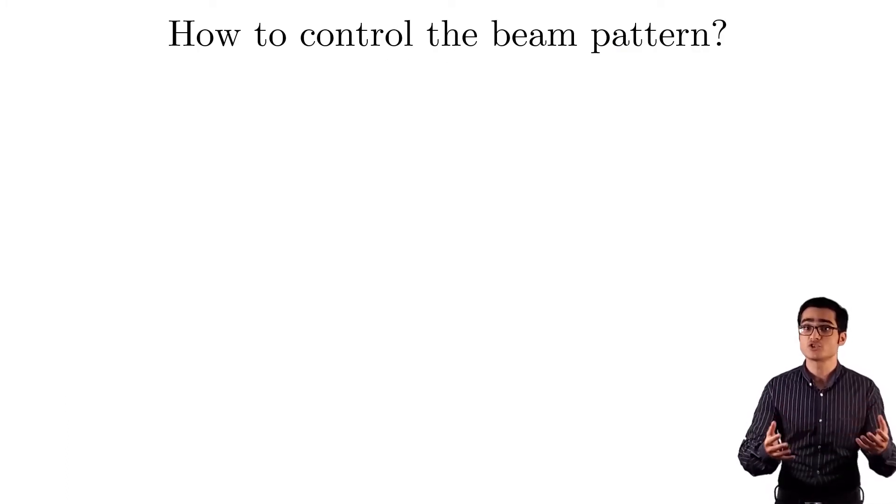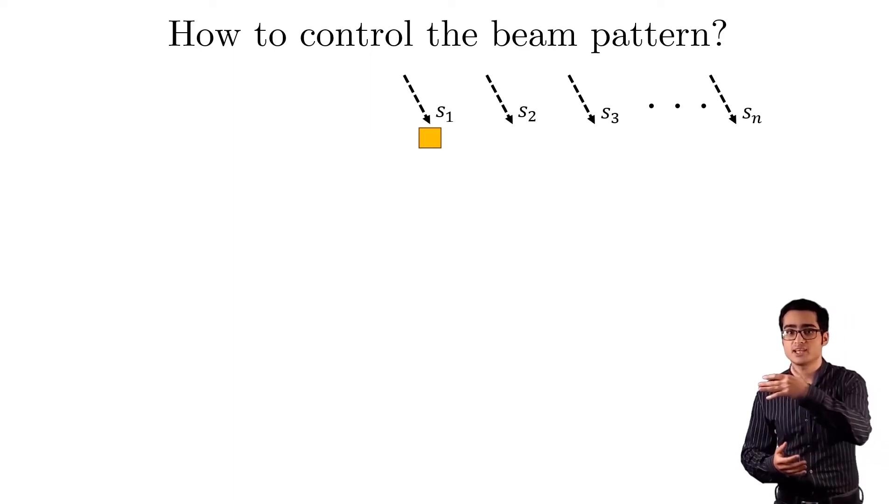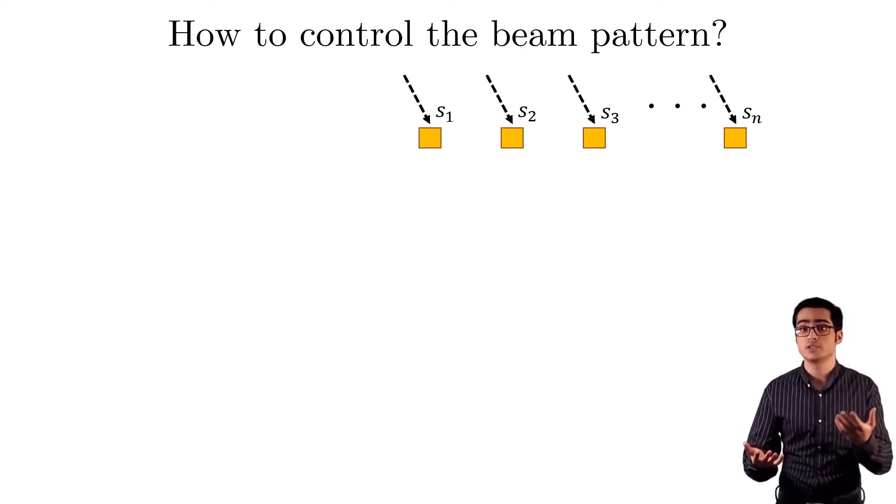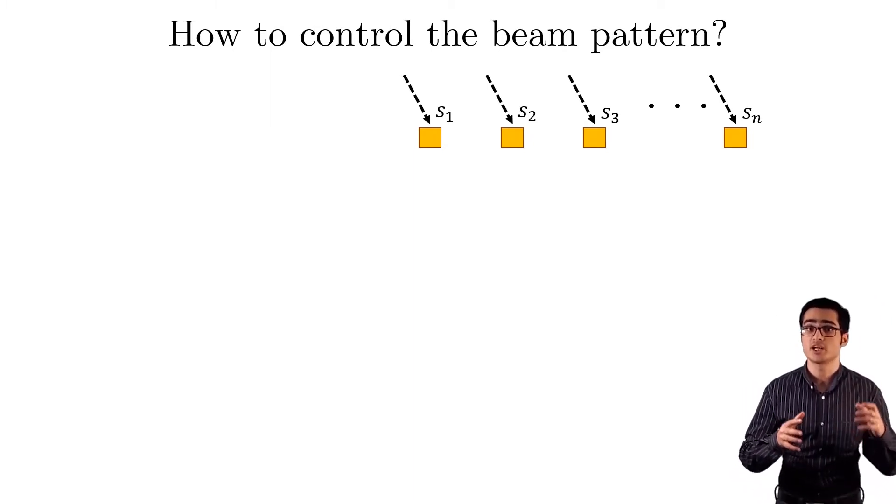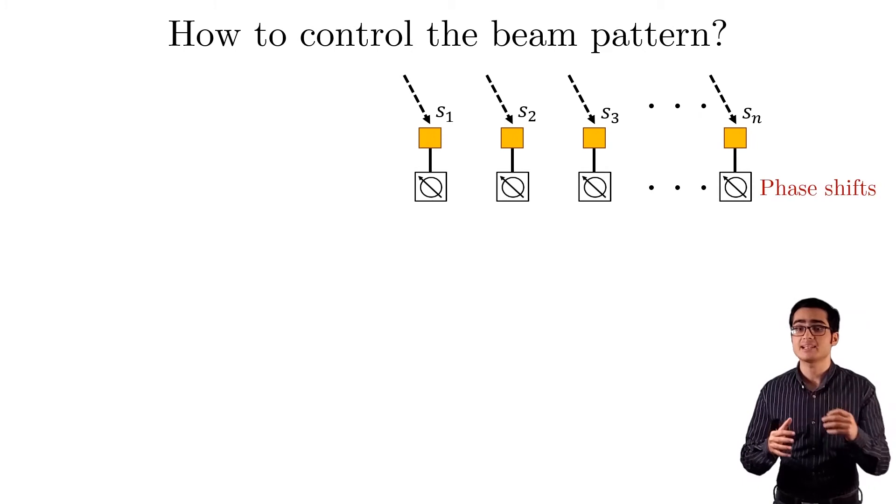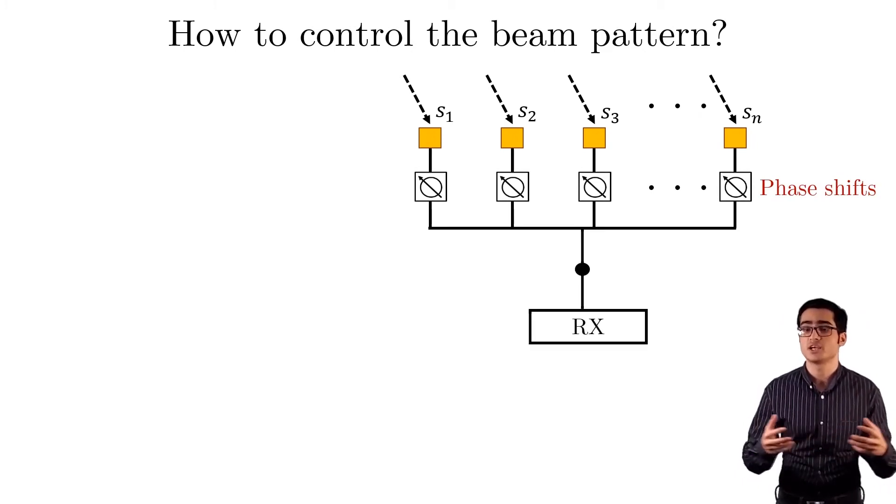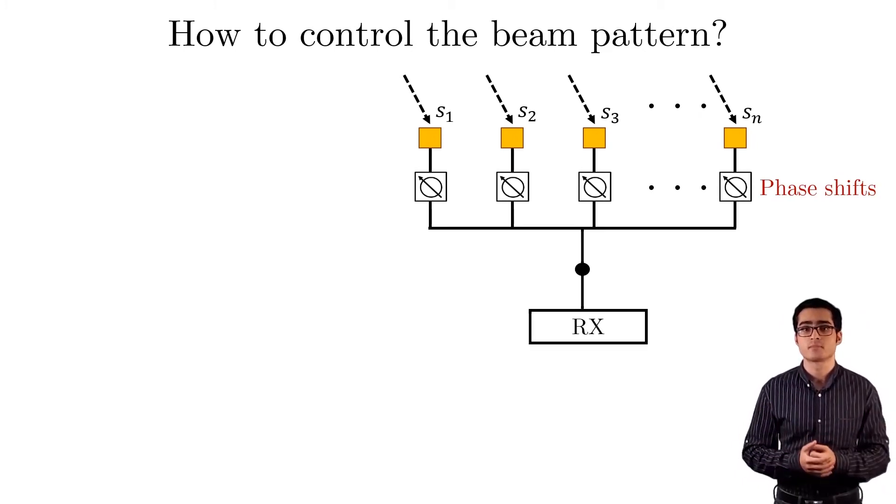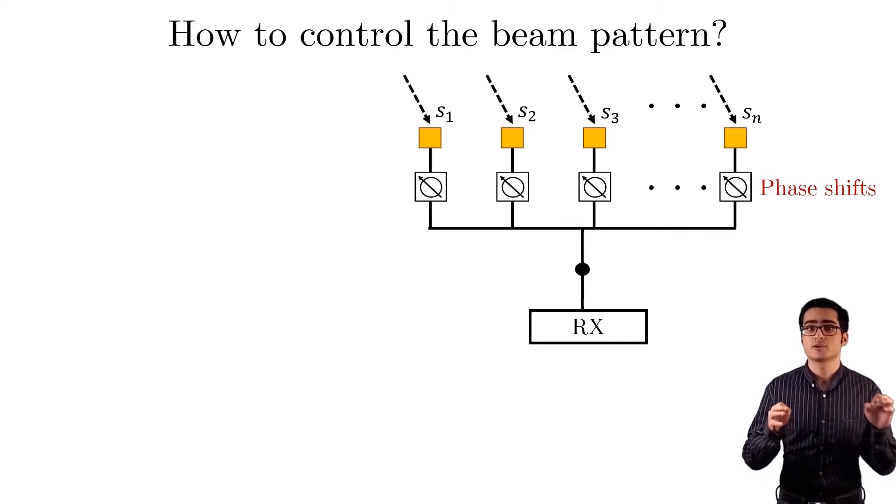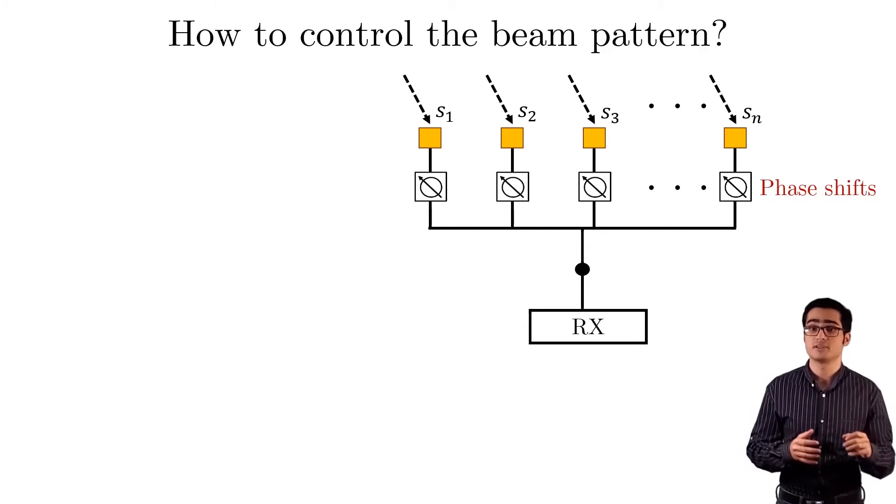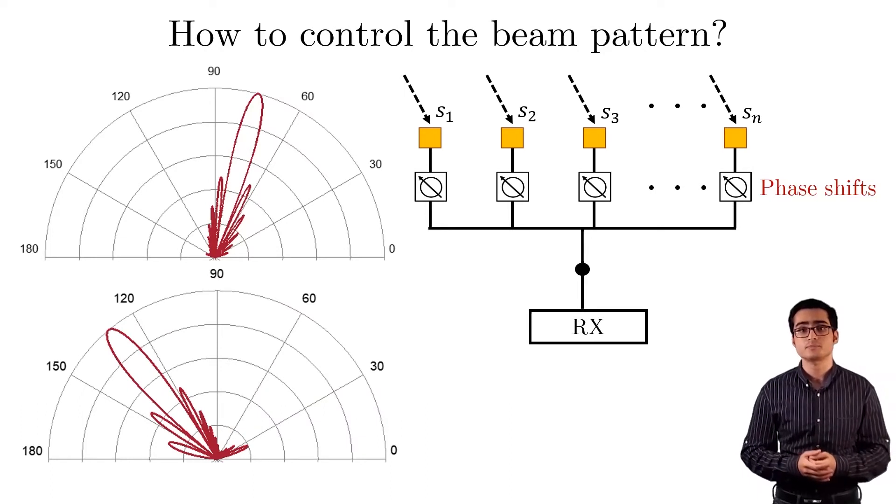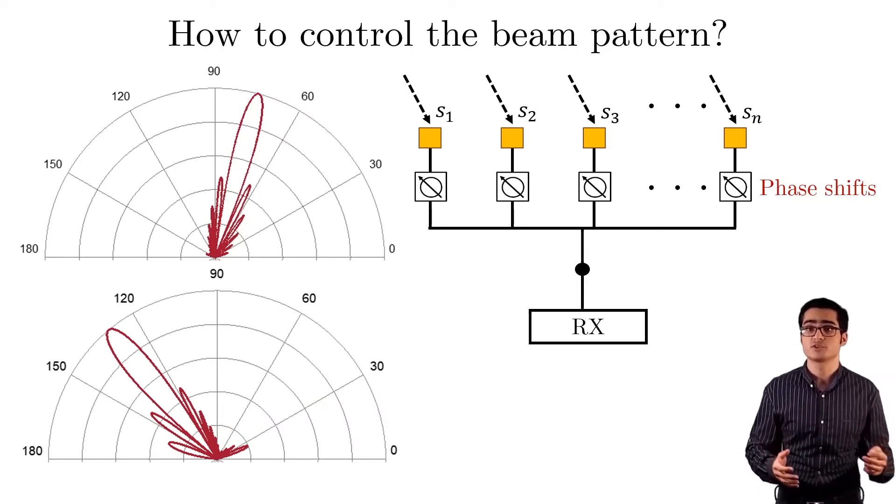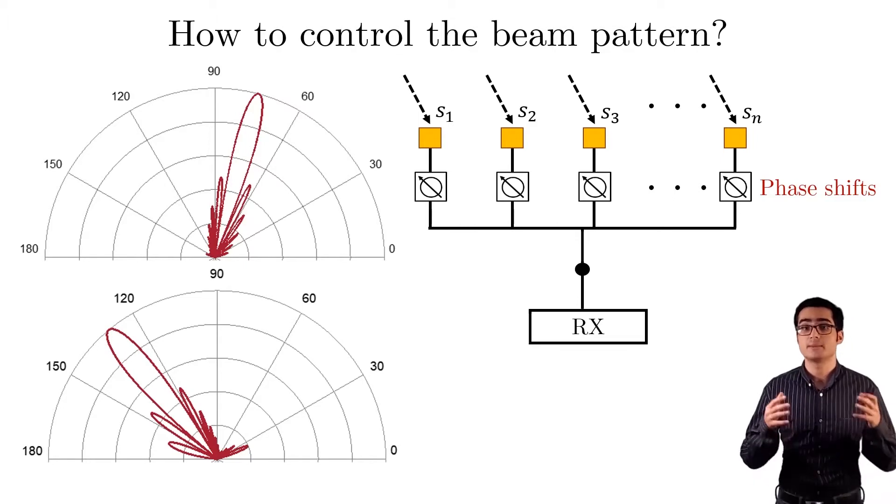When a signal is received at the receiver, it impinges on an array of antennas called a phased array, shown here as yellow squares. Then a phase shift is introduced on each of the received signals, and at the end we get the summation of these phase shifted signals. By controlling these phase shifts, we can control the main direction or the main lobe of the beam pattern, like having it towards 75 degrees here or 130 here. We will use the same phase shifters to create and control the nulls in the beam pattern.